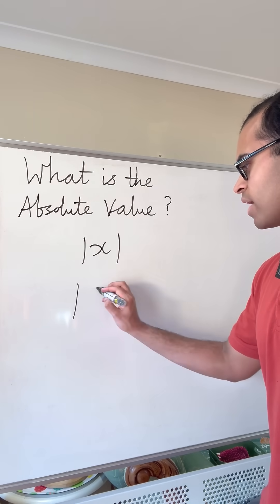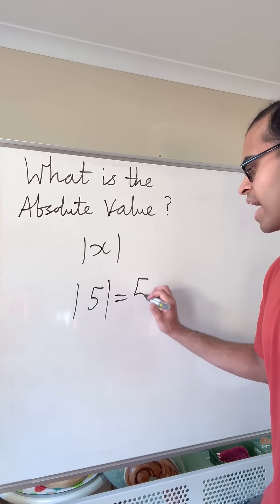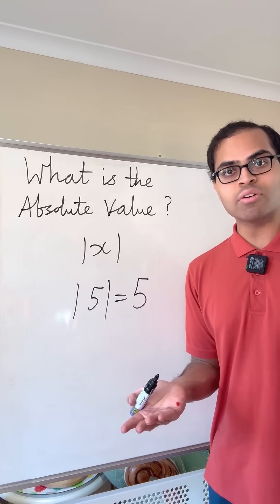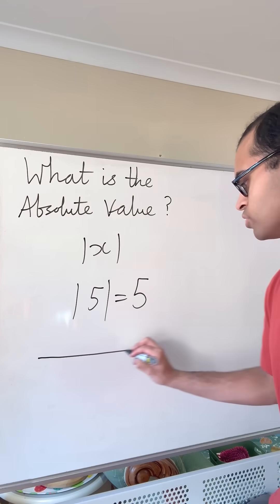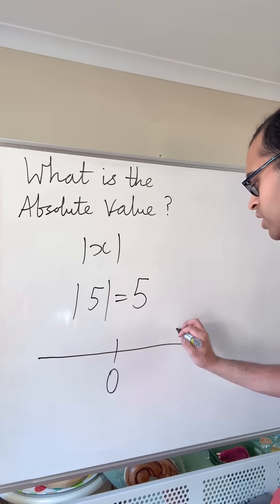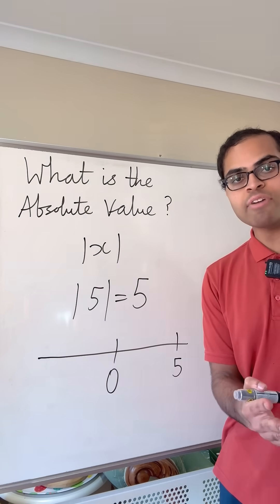So for example, the absolute value of five is just equal to five because that's the difference between five and zero on the number line. That's the distance. If you draw the number line, you have zero here, you have five here, that's how far you have to go.